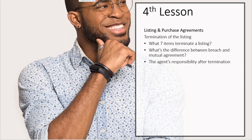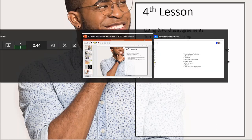Let's talk about the termination of a listing. We talked about how the listing got formed, and we talked about the three types of listing agreements that create agency. Now let's talk about how we terminate a listing agreement. Since agency is created by the listing, the same things that terminate the agency will also terminate a listing.